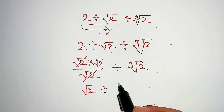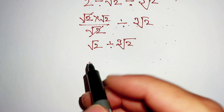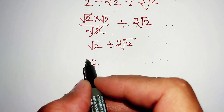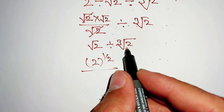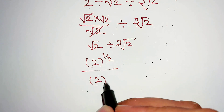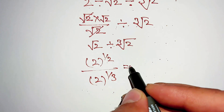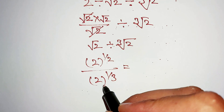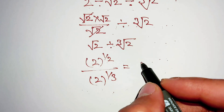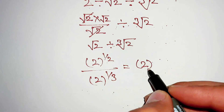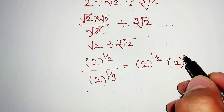Now this square root of 2 can be written as 2 to the power 1 over 2, and the cube root of 2 can be written as 2 to the power 1 over 3. To bring the denominator to the numerator, we change its sign: 2 power 1 over 2 multiplied by 2 power negative 1 over 3.